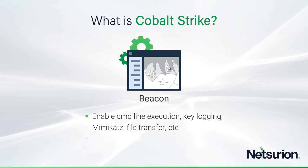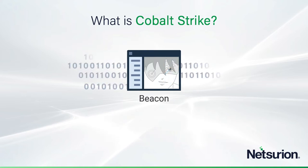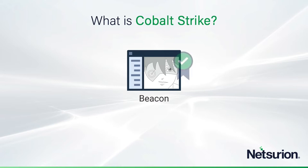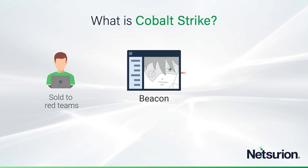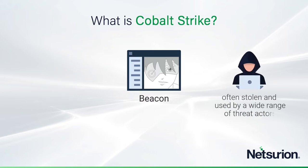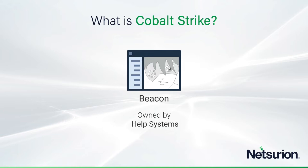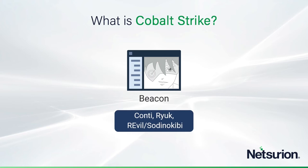Beacons are small, they are in-memory, they are file-less, and so they're quite difficult to detect once installed. It's a well-written, stable, and highly customizable framework. Even though it's legitimate software sold to red teams, the reality is it's often stolen and used by a wide range of threat actors. The vendor that sells this is called Help Systems. Well-known cyber criminal gangs that use Cobalt Strike include Conti, Ryuk, and REvil.